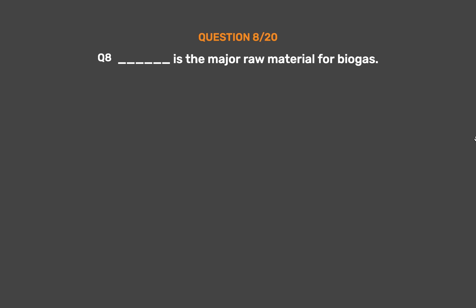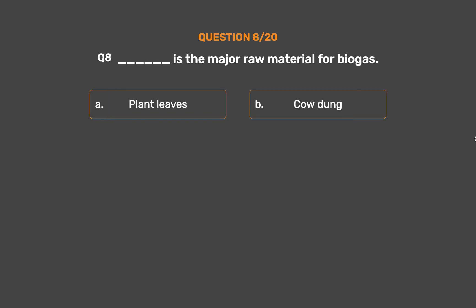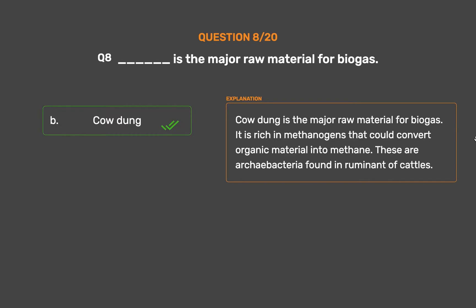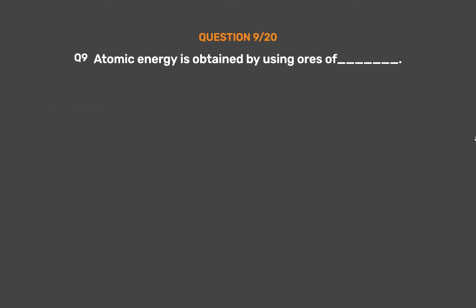Question number eight: underscore is the major raw material for biogas. Option A: plant leaves. Option B: cow dung. Option C: mud. Option D: grass. The correct answer is option B, cow dung. Cow dung is the major raw material for biogas. It is rich in methanogens that could convert organic material into methane. These are key bacteria found in the rumen of cattle.